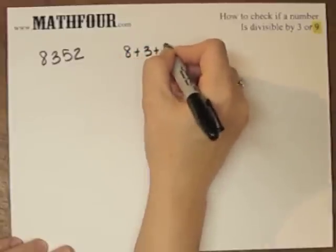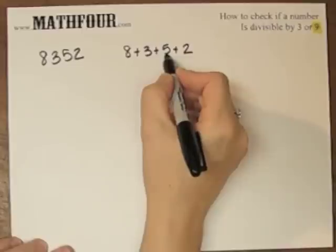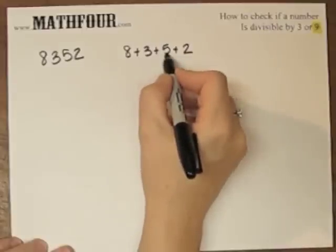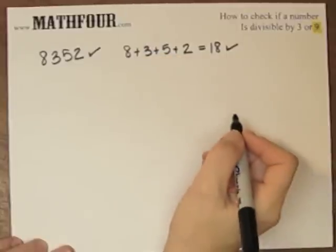So 8 plus 3 plus 5 plus 2. So that's 11 plus 5 is 16, plus 2 is 18. 18 is divisible by 9, so is 8,352.